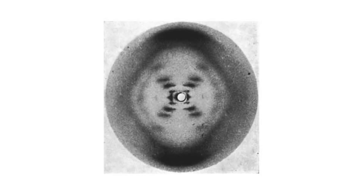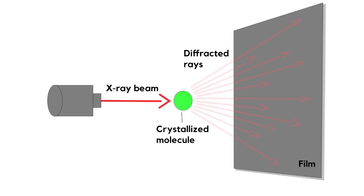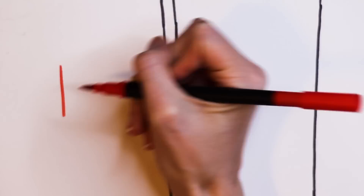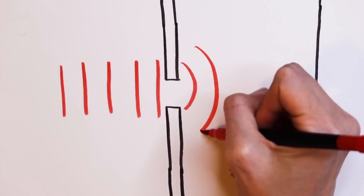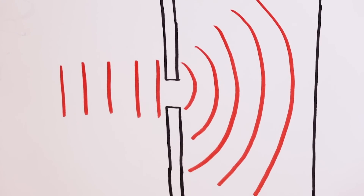This photo was made using a technique called x-ray crystallography. That means putting a crystal into a beam of x-rays, and the x-rays will interact with the electrons around the atoms in the crystal and create a diffraction pattern. Diffraction is when light spreads out, for example after passing through a slit.